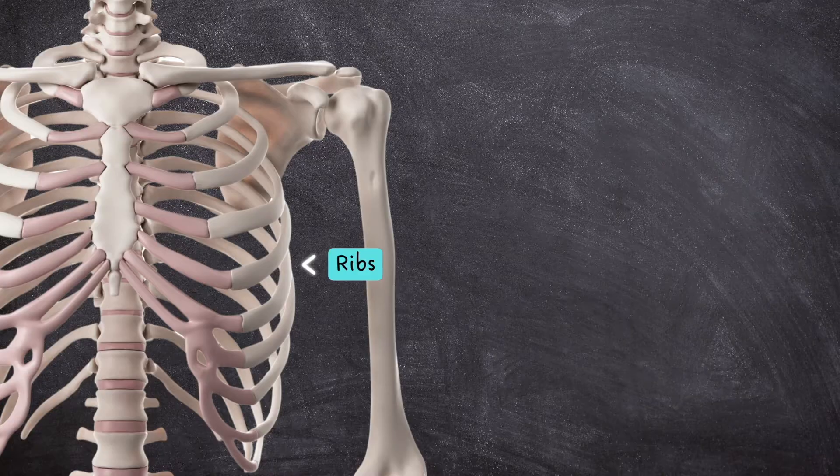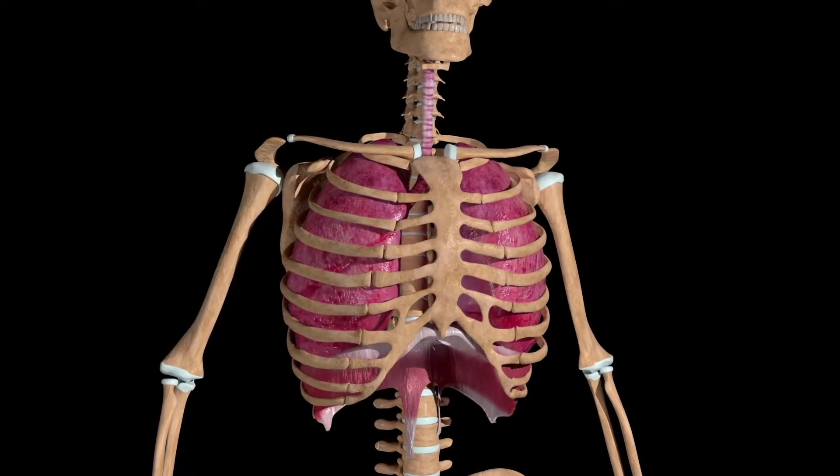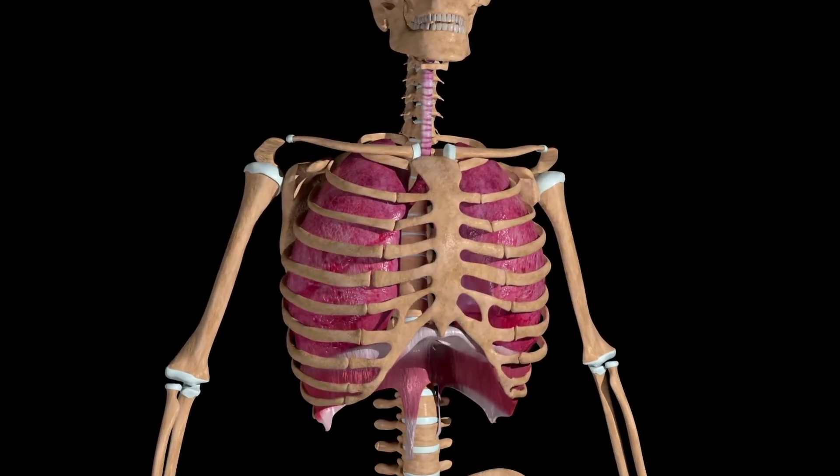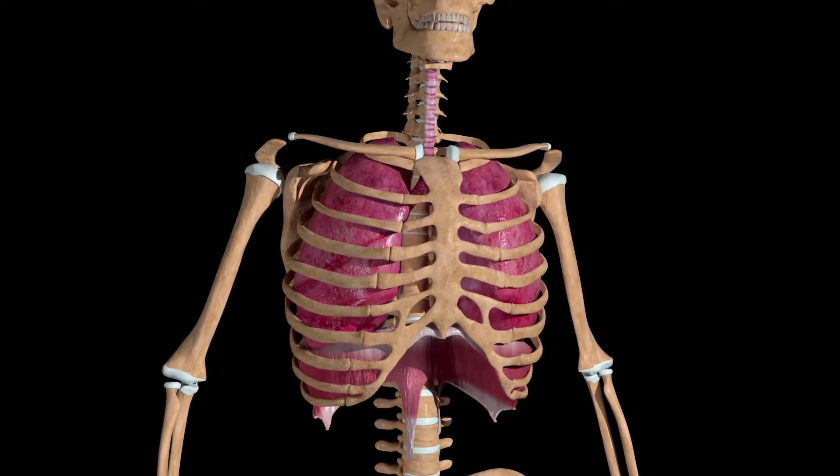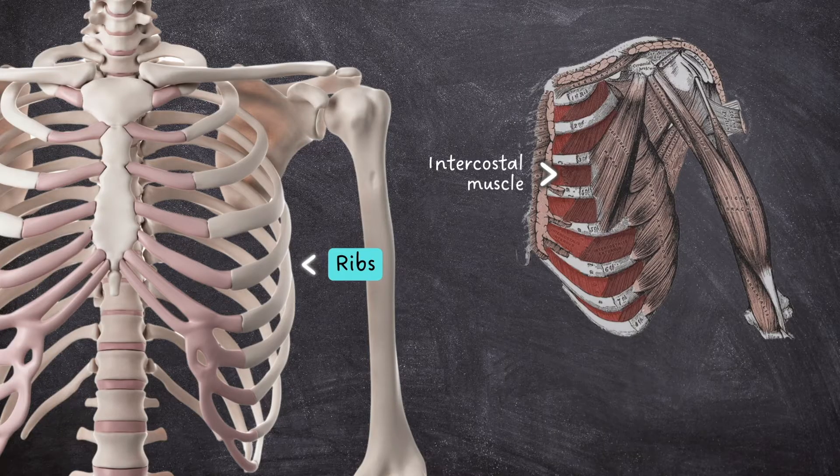They also play a key role in the process of breathing, otherwise known as pulmonary ventilation, as the ribcage is capable of expanding and contracting thanks to the internal and external intercostal muscles located between the ribs.